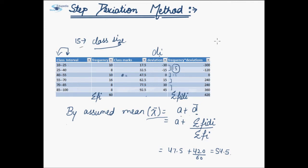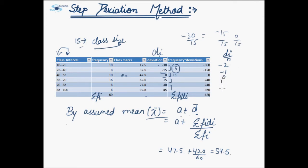So friends, if we divide this deviation by the class size, let us make another column. On dividing the first deviation by class size, that is minus 30 by 15, we will get minus 2. For the second deviation, minus 15 divided by 15, we will get minus 1. For the third deviation, we will get 0 over 15, that is 0. For the fourth it will be 1. Then 30 divided by 15 will be 2. And 45 divided by 15 will be 3. So we have simplified these deviations to more simple numerical values.